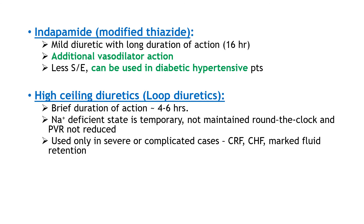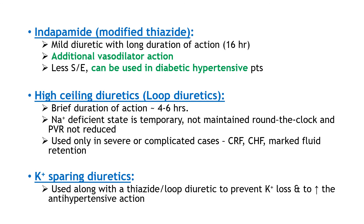Loop diuretics or high-ceiling diuretics have a brief duration of action of about 4 to 6 hours, and the sodium deficit state is also temporary. So the long-term, round-the-clock reduction in peripheral vascular resistance is not achieved like with thiazides. Therefore, high-ceiling diuretics are only used in severe or complicated cases like chronic kidney failure, congestive heart failure, and marked fluid retention. Potassium-sparing diuretics are used along with a thiazide or loop diuretic to prevent potassium loss and to enhance their antihypertensive effect — so basically they are adjuvants.